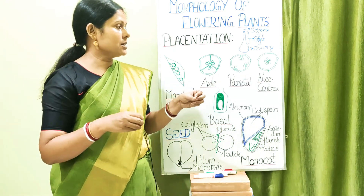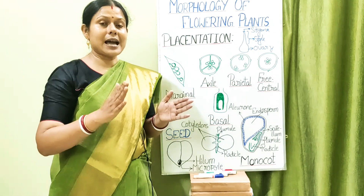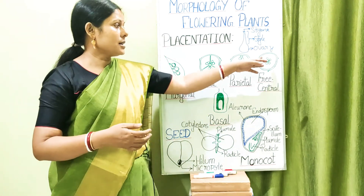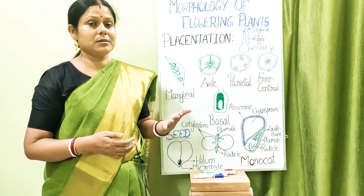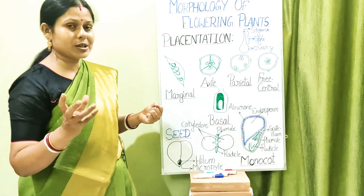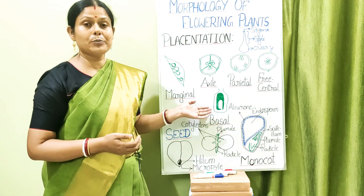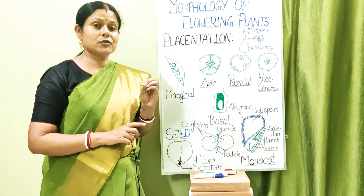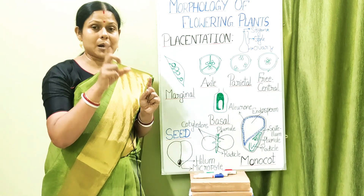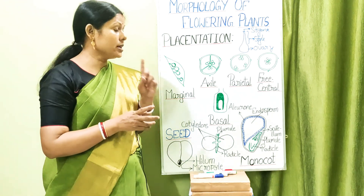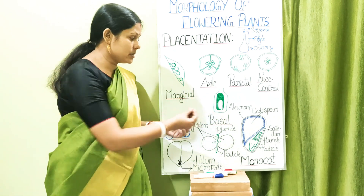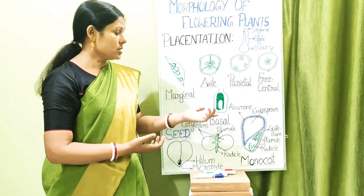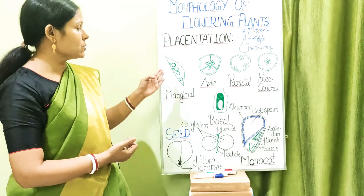Free central placentation has no partition or septum. From the center, a single parenchymatous axis — the placenta — bears ovules from base to upper end. This is seen in the tomato plant. The last type is basal placentation, found in flowers with a single carpel bearing only one ovule at its base. Tissue arises from the base, and this single ovule transforms into a seed. This is called basal placentation.